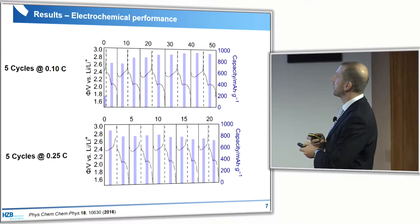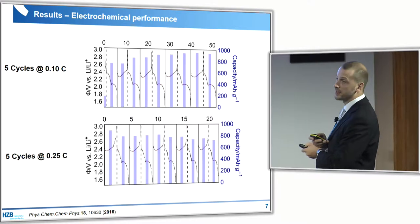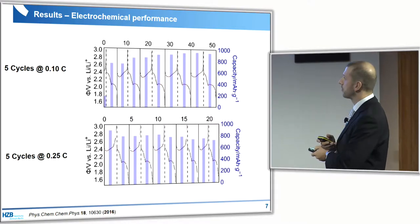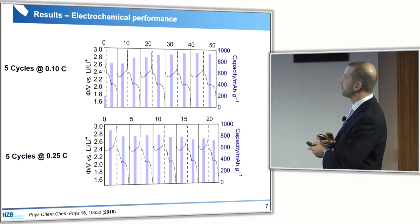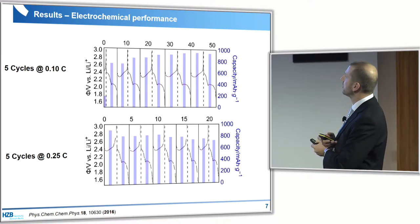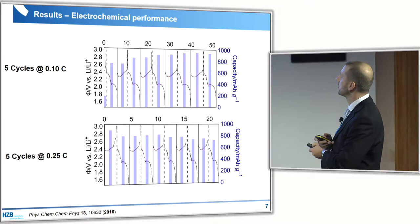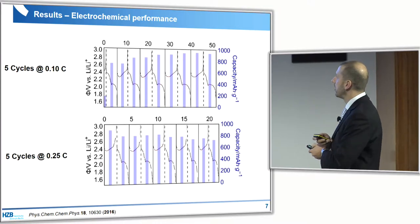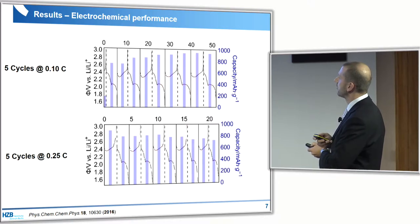Focusing on the first ten cycles: five cycles at 0.1C with an image taken by radiography every 20 seconds, with intermediate stops for potentiostatic EIS. These five cycles were done at C/4. The capacity is good at almost 1000 mAh per gram of sulfur, with a slight increase at C/4 and a slight decrease at the higher C-rate, which is what you would expect.